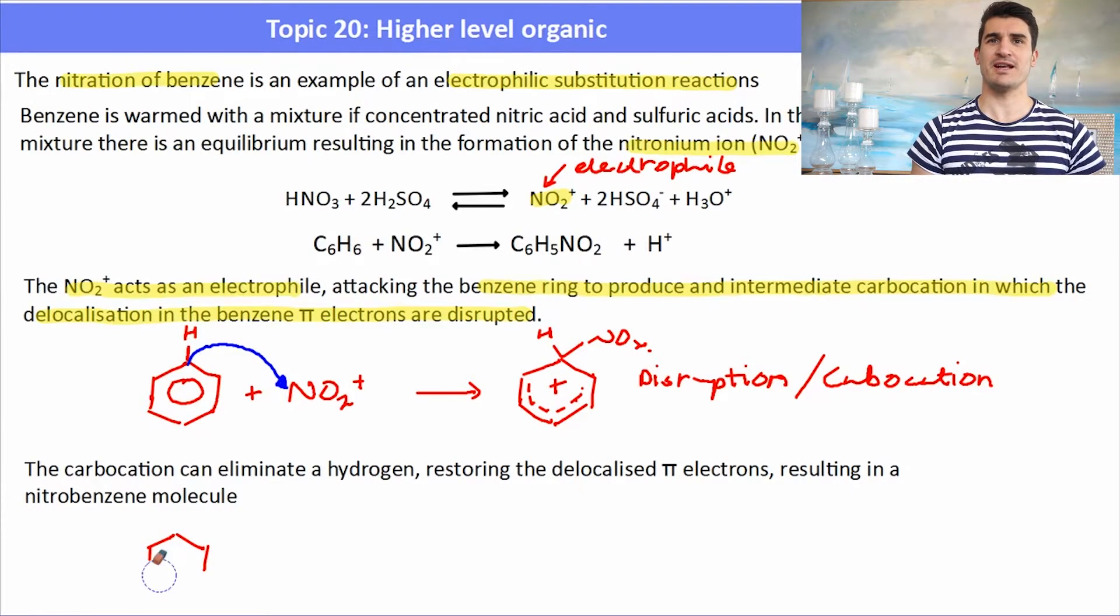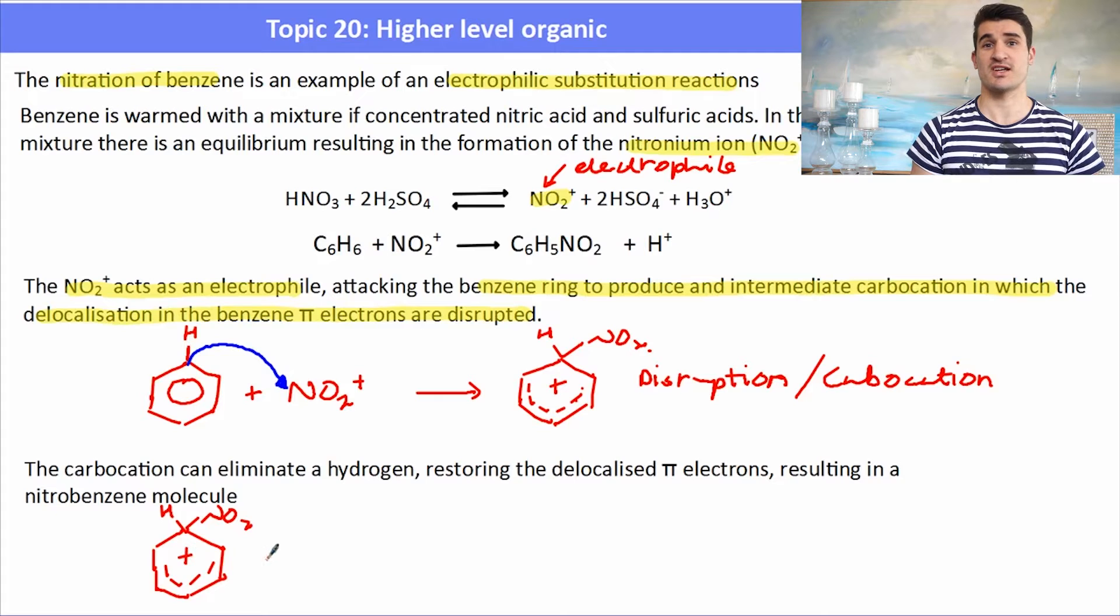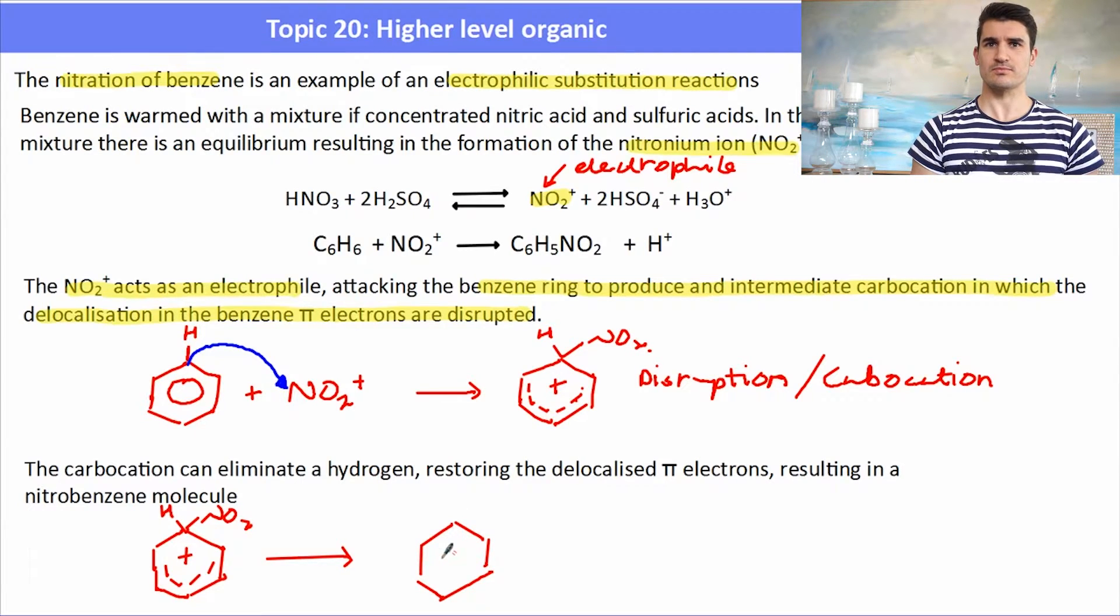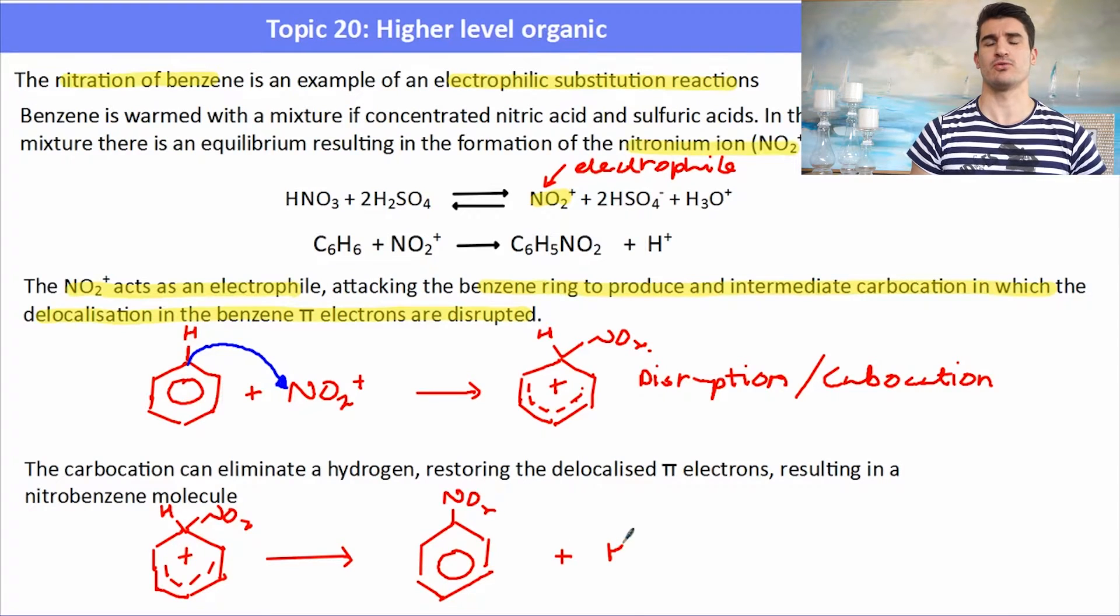The carbocation will eliminate the hydrogen atom from the ring, allowing a covalent bond to form between the carbon and the nitro group. That re-establishes our delocalization in the ring. The pi electrons are maintained and we have a nitrated benzene. This results in what we call a nitrobenzene molecule, and we've lost a hydrogen ion.